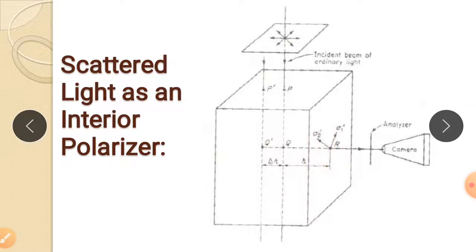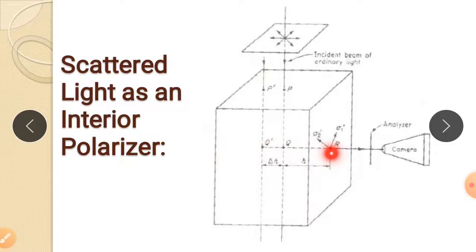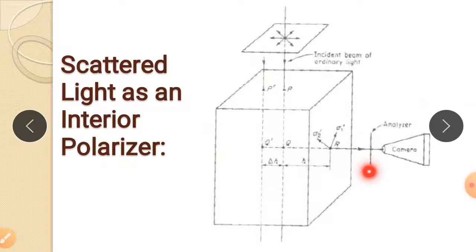From Q to R, the scattered light develops some phase difference. At point Q, Sigma 1' and Sigma 2' have different vibration phases; at R, there is a measurable phase difference. This phase difference, representing the average secondary principal stress over the distance QR, is determined by inserting an analyzer between point R and the camera, which analyzes the phase difference and produces an image captured by the camera.